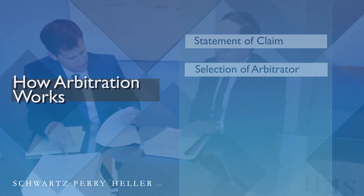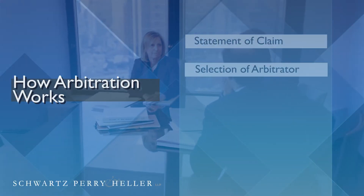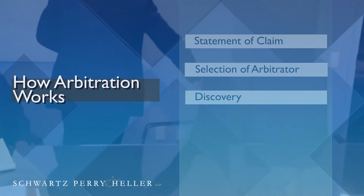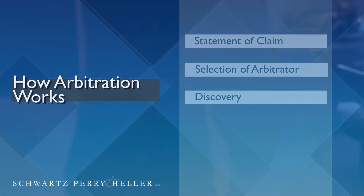Unlike court, where a person has no discretion whatsoever in who is going to be the judge in their case, in arbitration the parties actually get a say in who is going to be the arbitrator. The next step in arbitration is the discovery phase, and that looks like the litigation phase you would see in court, except that it's shorter.